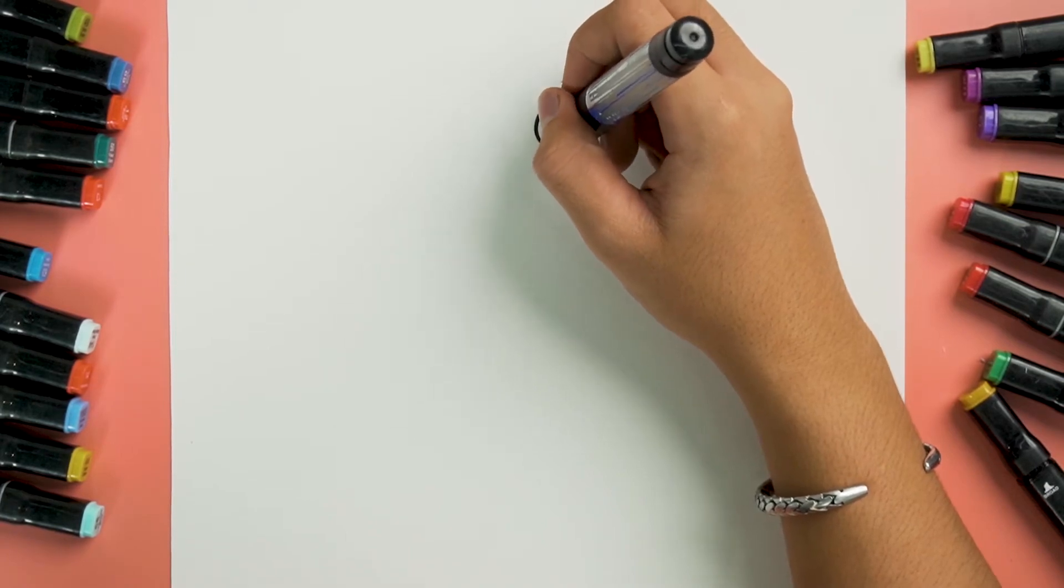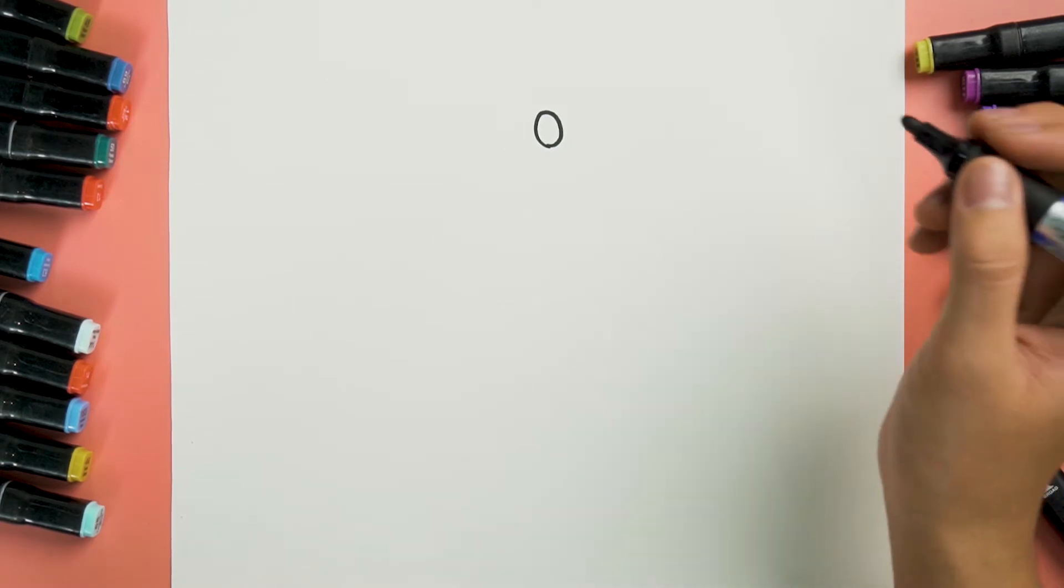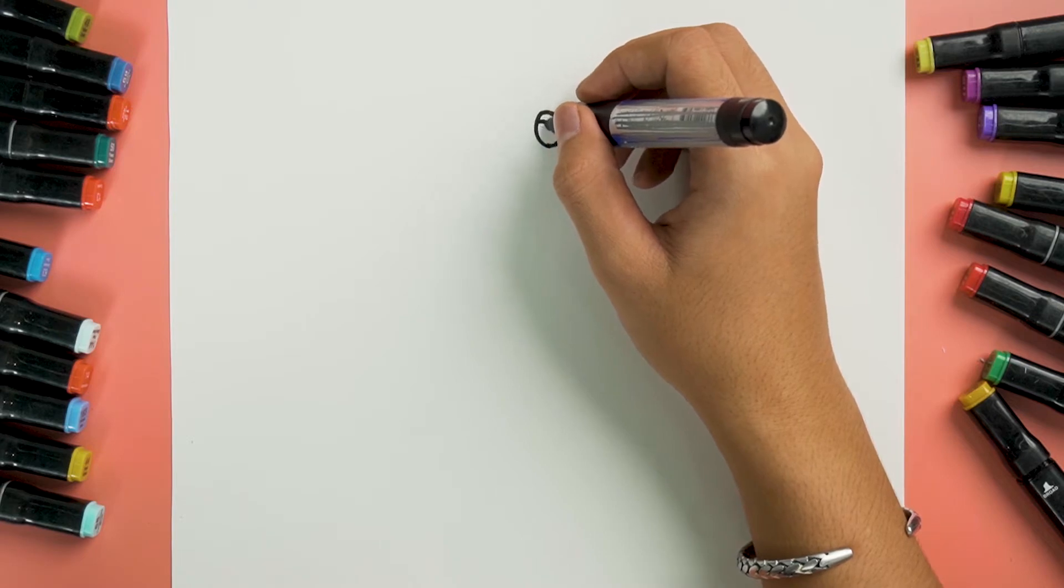We will start with the eyes first by drawing a circle like this and add a curve here in the circle to make a pupil for a dolphin.